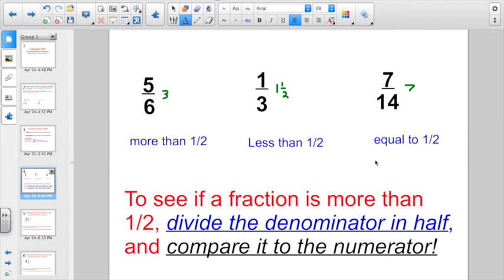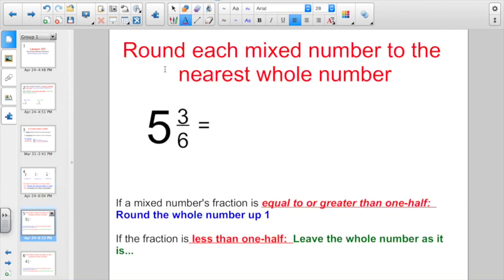It's about that easy, and we've been going over this for a while. So let's use this to go and round some mixed numbers. So we have 5 and 3/6. Half of 6 is 3. Compare that to the numerator. 3 is equal to 3, equal to a half. And so if it's equal to or greater, we want to round up. So 5 and 3/6 or 5 and a half, we're going to round that guy up to 6.